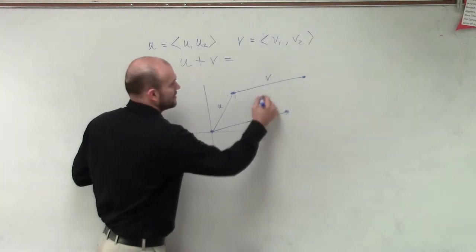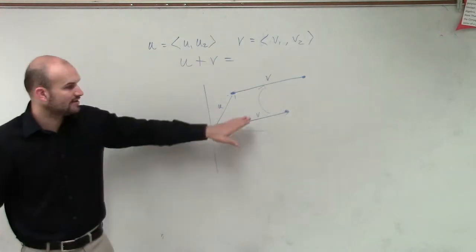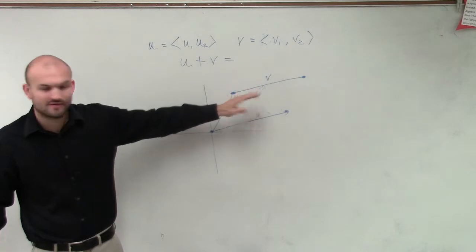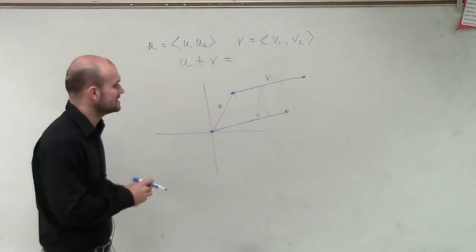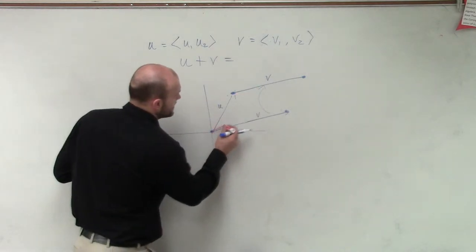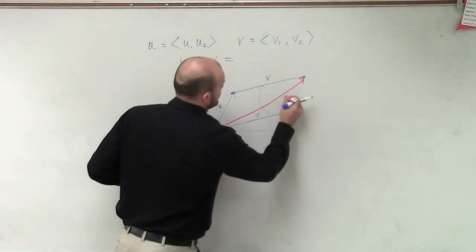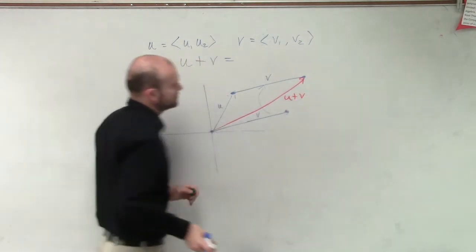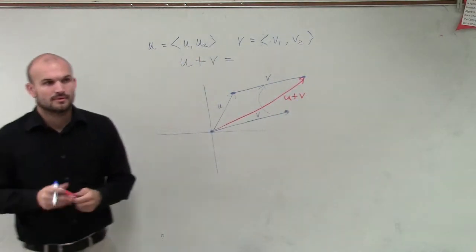So you can see, all I'm doing is transposing one vector from its component form to the tail of the other vector. What that does is create our new vector, u plus v.